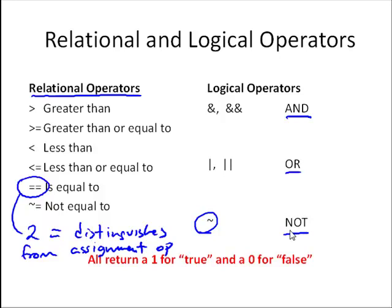Not returns true if everything next to the not symbol is false. Basically, you can think of this as flipping the logical value. All of these logical operators and relational operators return a 1 for true and a 0 for false.